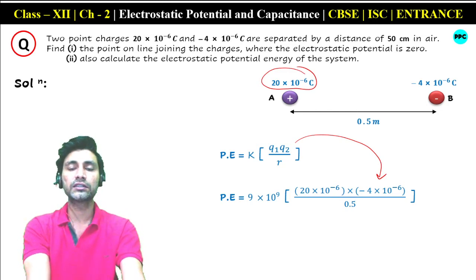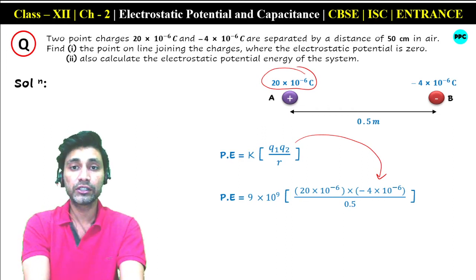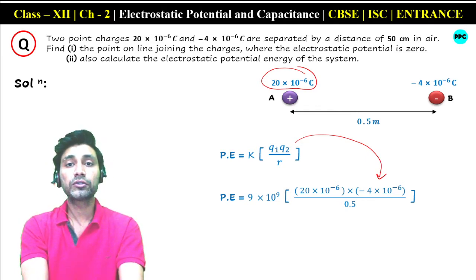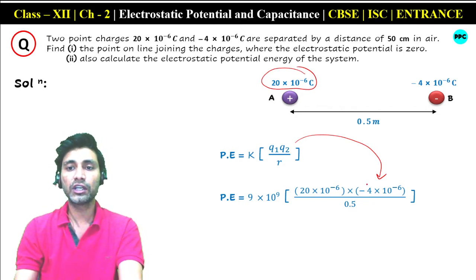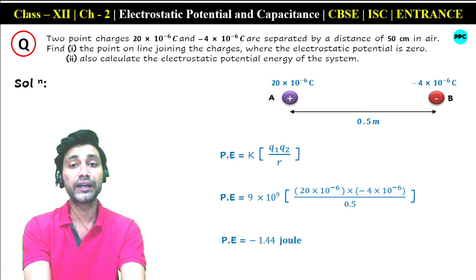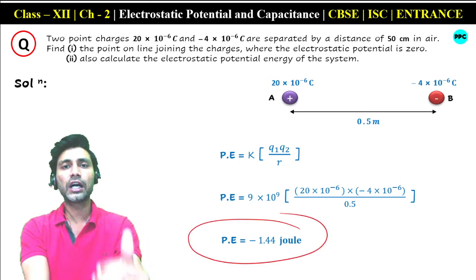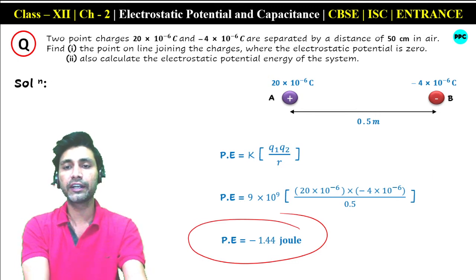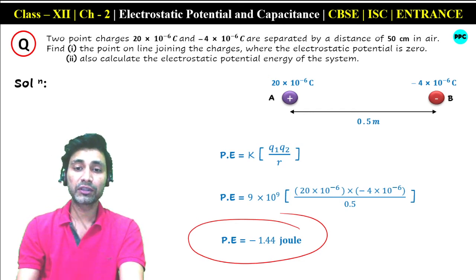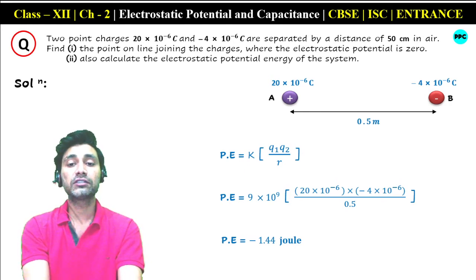On solving, the potential energy will be negative — minus 1.44 joules. The negative sign indicates attraction between the charges. If potential energy is positive, it means repulsion. If one charge is negative and the other positive, potential energy is negative (attraction); if both are same sign, potential energy is positive (repulsion). So potential energy of this system is minus 1.44 joules.